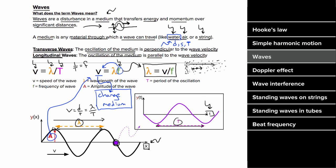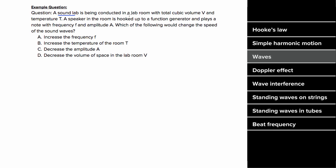What does an example problem involving waves look like? A speaker in a lab room with volume V and temperature T plays a note with frequency F and amplitude A. Which of the following would change the speed of the sound waves? Increasing the frequency just makes the sound a higher note but doesn't change wave speed. Increasing the temperature is a change to the medium itself, so this would change the speed of sound. Decreasing amplitude makes the sound softer, and decreasing the room volume just gives you less medium. The best answer is B.